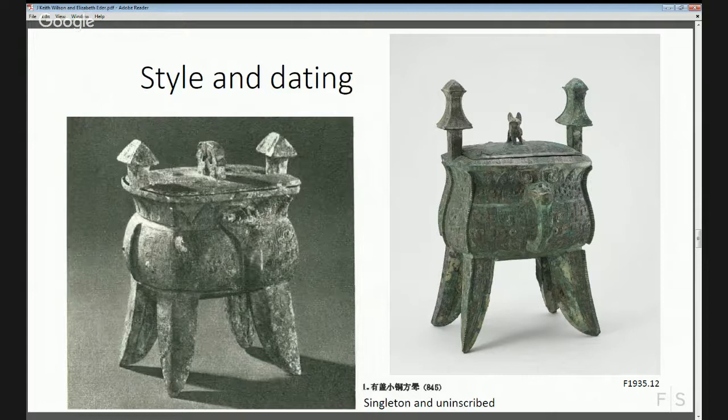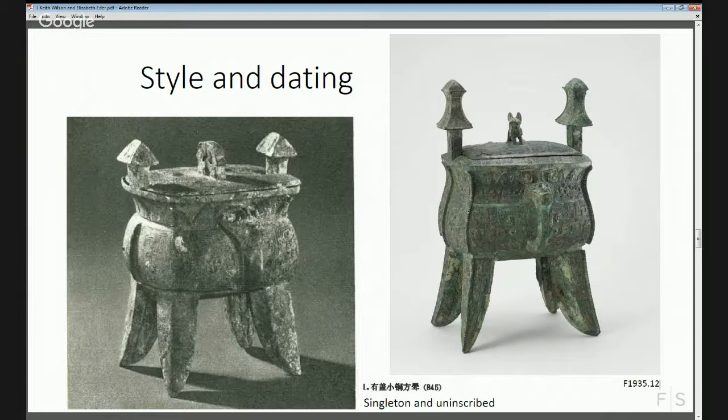Here's one case in point where the object on the right is in the Freer collection, acquired in 1935 — accession number F 1935.12. You can type that into the OpenFS query box to get caption information and a zoomable photograph showing just how amazing the surface decoration is. These are great to use in the classroom if you have a whiteboard or projection, because you can really see the detail. What makes the bronzes so interesting is the patterns and decorations — many have mythical animals, and we're not exactly sure what the designs may mean.